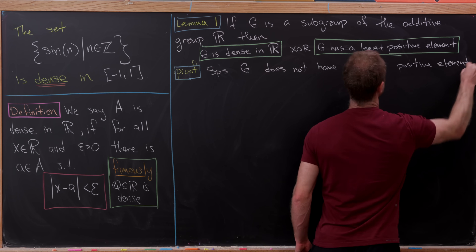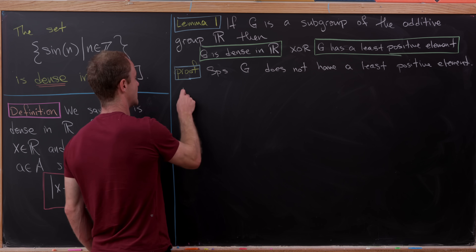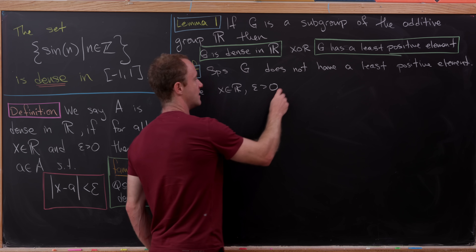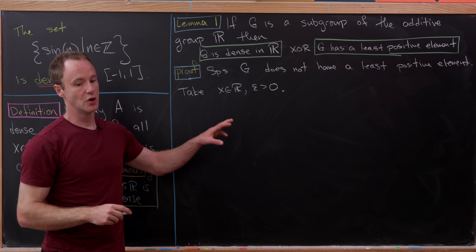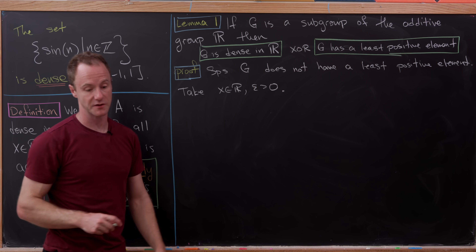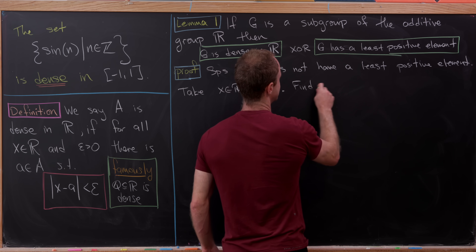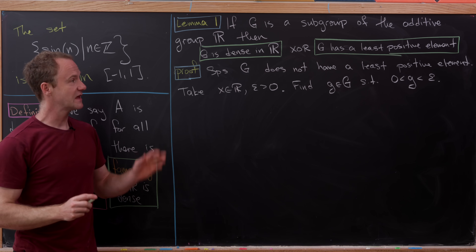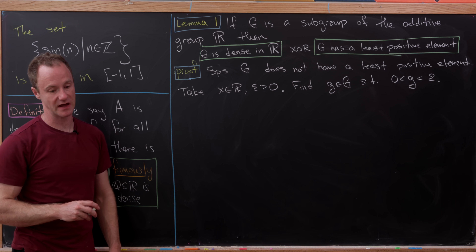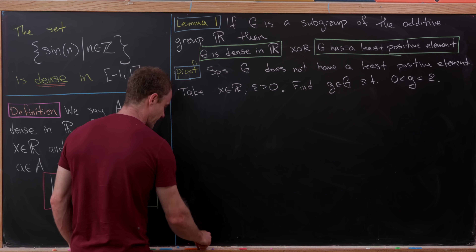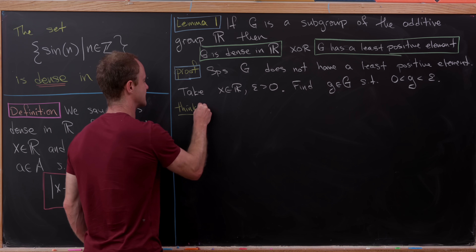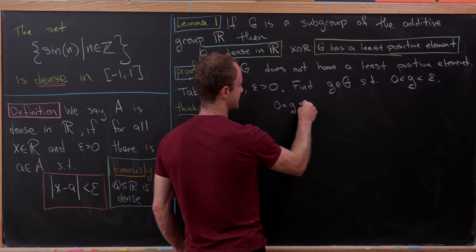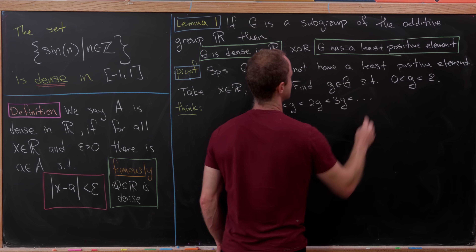Let's start by assuming that G does not have a least positive element and show that it is dense in ℝ. So suppose G does not have a least positive element. Take an arbitrary real number x and epsilon bigger than zero. Since G does not have a least positive element, we can find an element of G smaller than epsilon. So let's find a little g in G such that g is bigger than zero yet less than epsilon.